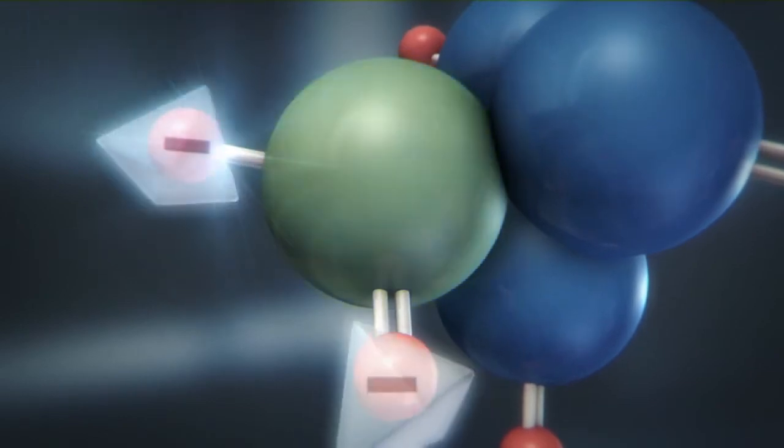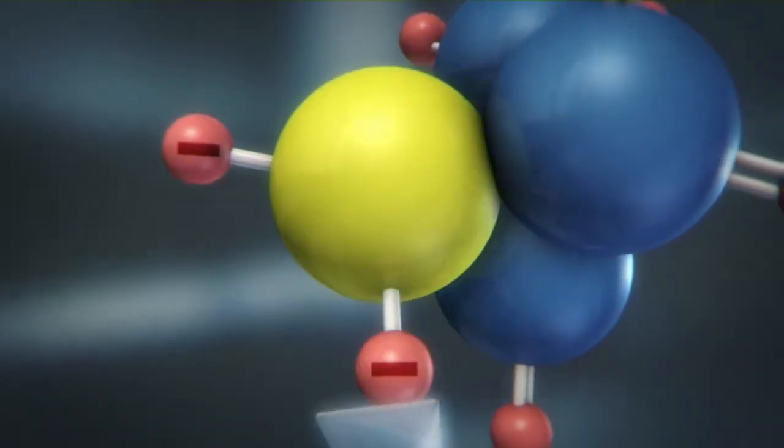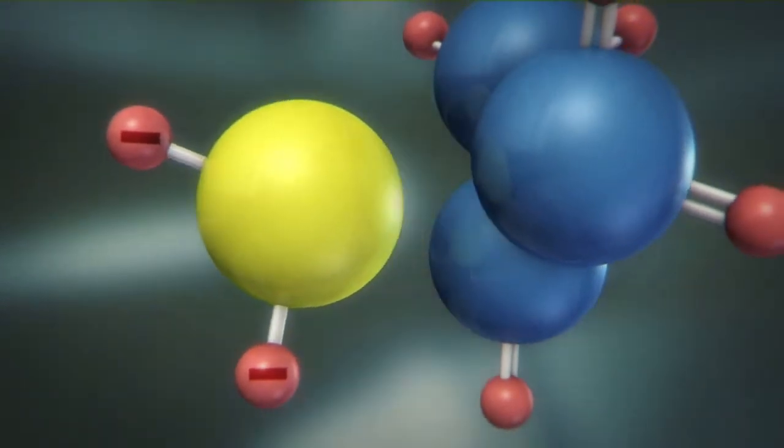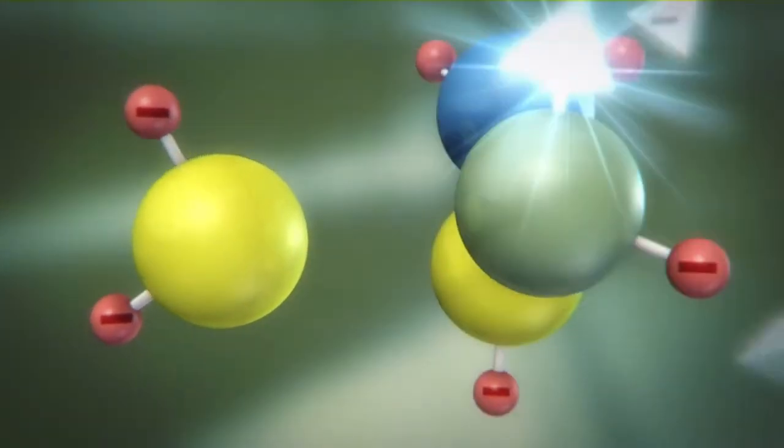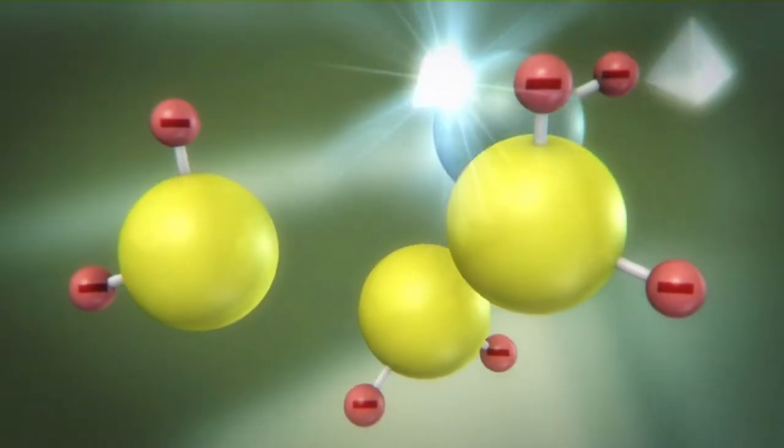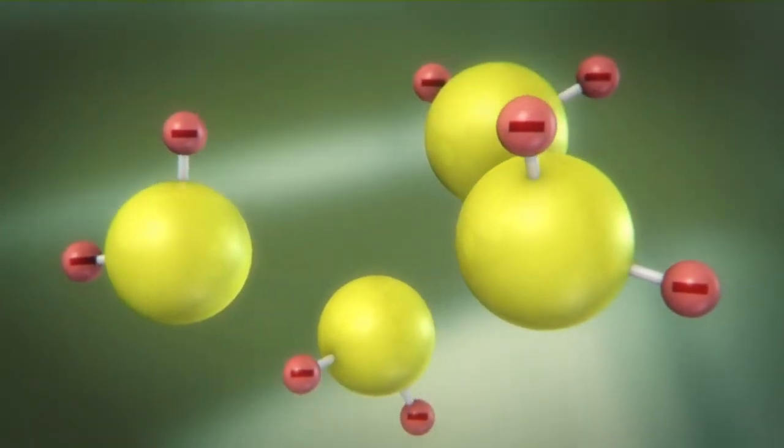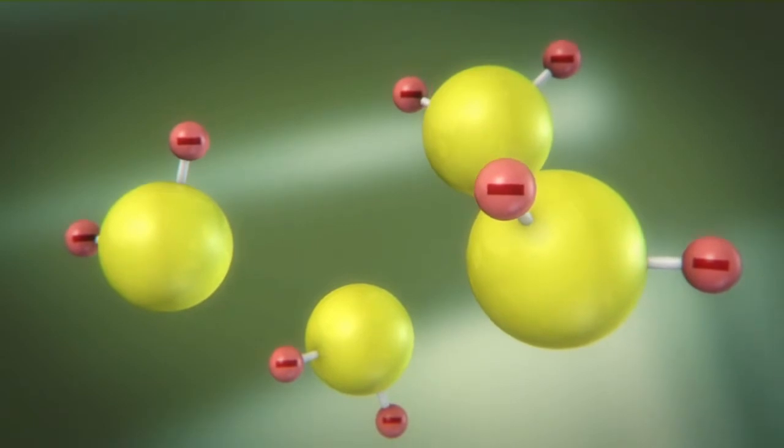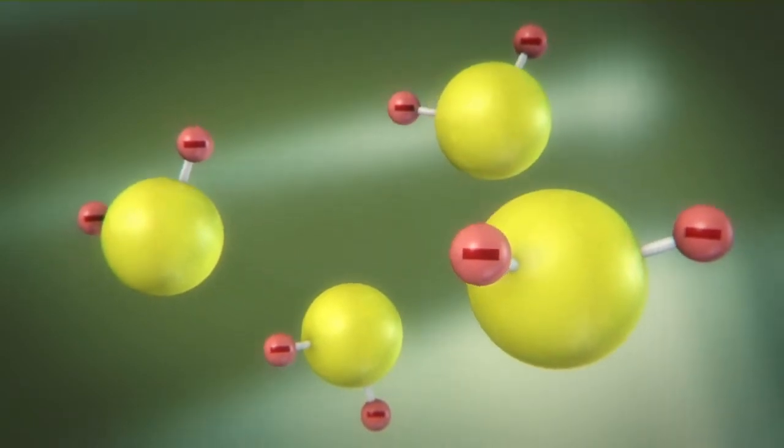In this reduction process, the strong reducing agent sodium hydrosulphite causes the indigo to take up negative charges. The molecules repel each other, making the indigo soluble in water. In this process, indigo loses its blue color. It turns yellow.